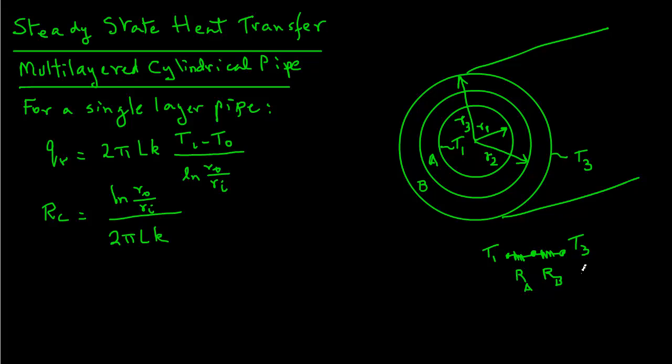So now we can go ahead and write down the individual resistance terms. So RA will be equal to natural log of R2 divided by R1. Note that it's for material A. And for material A, the outside radius is R2. Inside radius is R1. And so in the denominator, we will have 2πLk. And k will be for the inside material which will be KA.